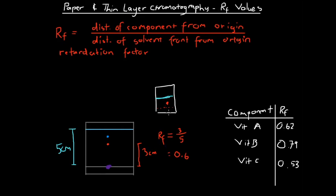If we look at the formula for the retardation factor, we can see that an RF value is always going to be less than 1. We should never have a component of a chromatogram travelling as far as or further than the solvent front, and so for that reason the RF value should always be less than 1.